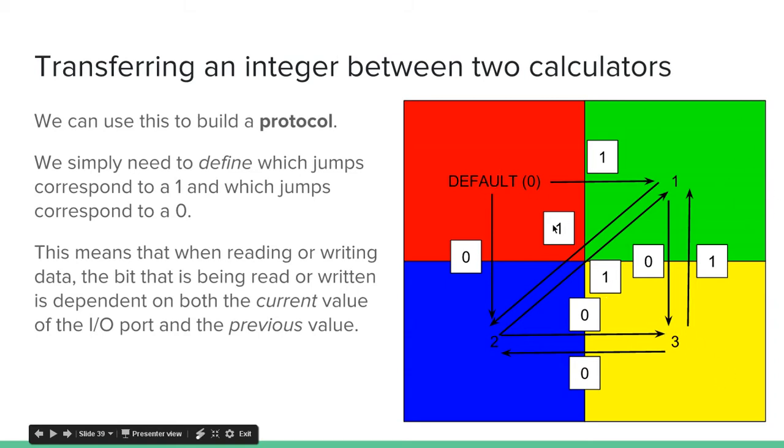When we're at the default, you can jump to 1 or 2, but you can also jump to 3 if you want to say the message has no data. So you can jump to 1, that signals a 1. A 0 is jump to 2 or jump to 3. That means there's no data in the message. It's an empty message.